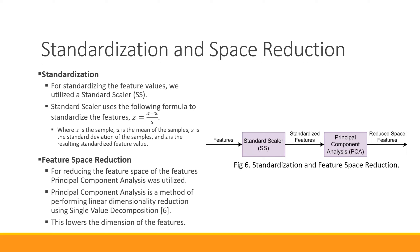Before the features go to our models we do some additional processing. We standardize their values using StandardScaler and reduce their feature space using Principal Component Analysis (PCA). For standardization, the equation is z equals x minus u over s, where x is the sample, u is the mean, s is the standard deviation, and z is the standardized feature value. For feature space reduction, PCA uses singular value decomposition to linearly reduce dimensions, which from my observations improved performance noticeably. Another ablation study will showcase how PCA improves performance.